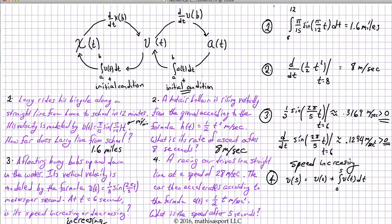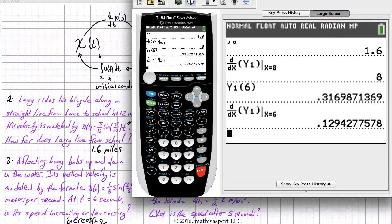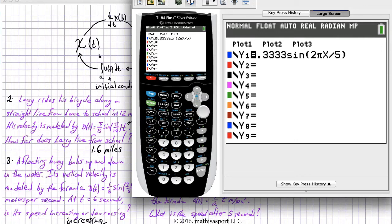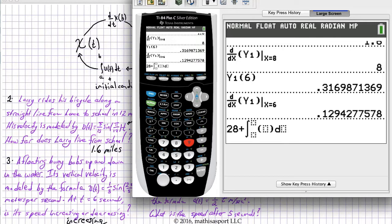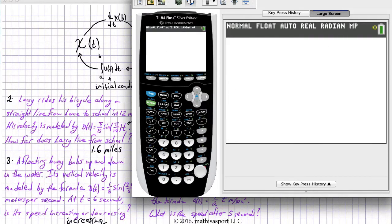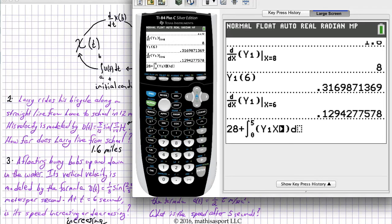Let's do that on the calculator. First, we'll put y1 in. We'll put it in as one-half t. Of course, we're going to use x, and then we'll make use of math nine. We'll write 28 plus math nine. We're going to go from zero up to five. Our function is going to be y1.